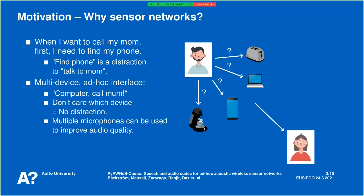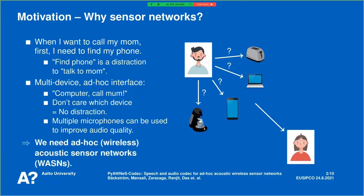Multiple microphones in the neighborhood could then be used to improve audio quality. That's why we need ad hoc wireless acoustic sensor networks. These devices would all be devices which you already have, so this would be a software-only change — also an affordable approach.